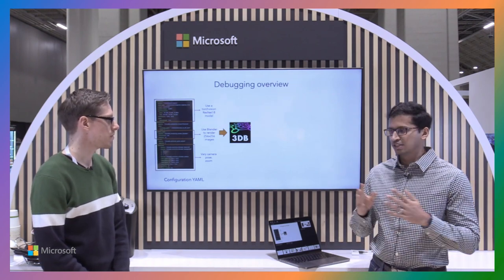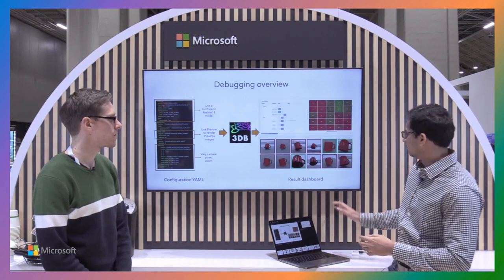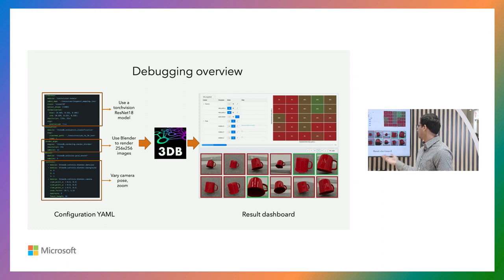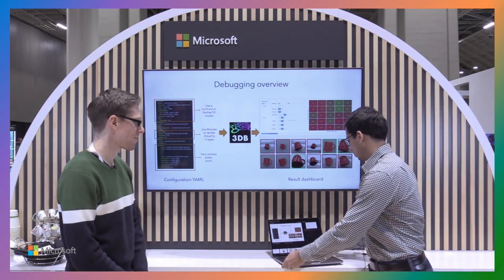All of this configuration YAML goes into 3DB. 3DB parses this YAML, understands what you're looking for, sets up the model for inference through PyTorch or any framework that you choose, uses Blender to set up the renderer and synthetic image generator, and renders a bunch of images corresponding to the perturbations of interest. Finally, it has a result dashboard where you can see the performance of your model under various conditions. An example here is showing all the images marked in green are where your model is classifying things correctly, but you also have images in red which we can think of as challenging cases for the model. It'd be good for us to understand why that's happening and potentially improve our models.